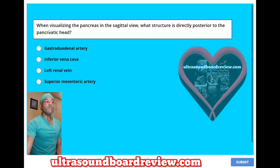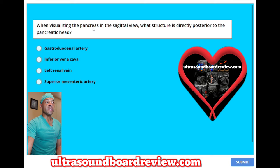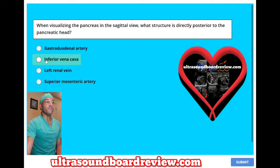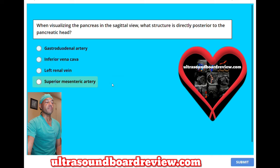When visualizing the pancreas in the sagittal view, what structure is directly posterior to the pancreatic head? A, gastroduodenal artery. B, inferior vena cava. C, left renal vein. Or D, superior mesenteric artery.